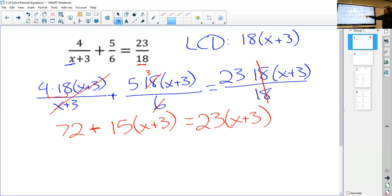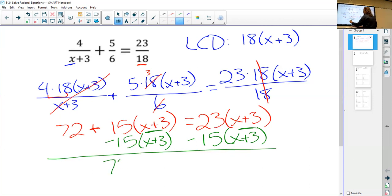Plus, so here we have 18 and 6. So the 6 will cancel out. 18 divided by 6 is 3. So we have 5 times 3 is 15 times (x+3) equals, and then on the right-hand side, we have 18 on top and bottom. Those cancel out. So we have 23 times (x+3). So a little bit better. Most importantly, we don't have a fraction anymore. And now we're just solving for x.